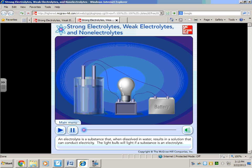An electrolyte is a substance that when dissolved in water results in a solution that can conduct electricity. The light bulb will light.